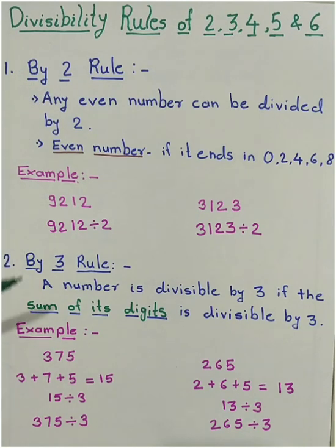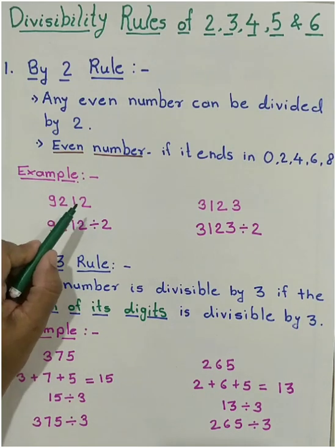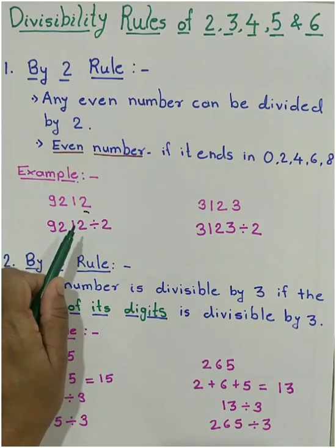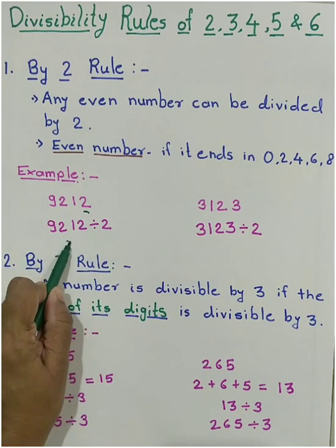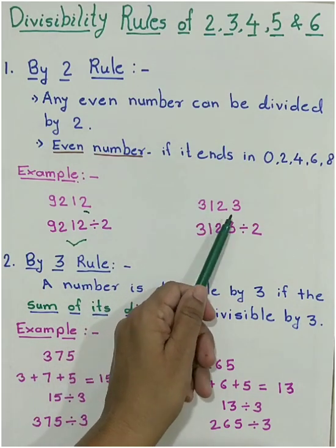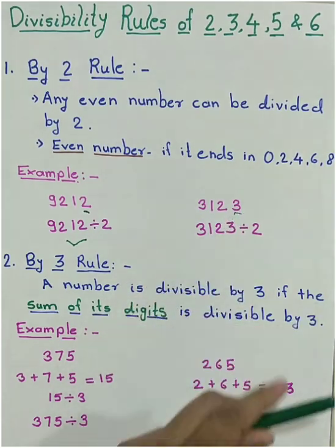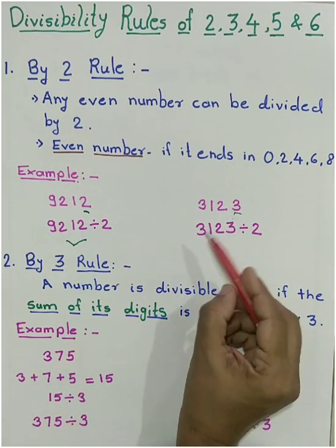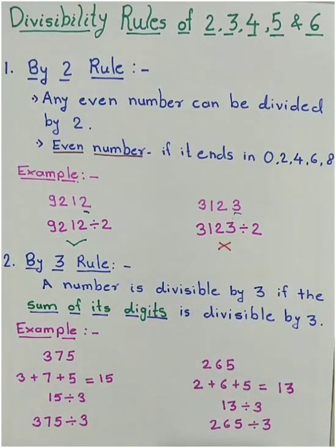The first example is 9212. And this number ends with 2, means it's an even number. Hence, we can divide this number with 2 and it passes our rule. The next example is 3123. This number ends in 3, it means it is an odd number. Hence, we can't divide this number with 2 and it fails the rule.